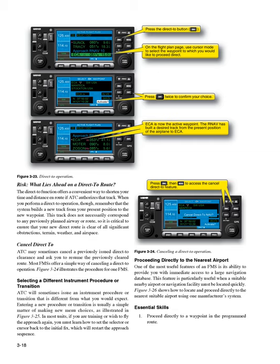The direct-to function offers a convenient way to shorten your time and distance en route if ATC authorizes that track. When you perform a direct-to operation, remember that the system builds a new track from your present position to the new waypoint. This track does not necessarily correspond to any previously planned airway or route, so it is critical to ensure that your new direct route is clear of all significant obstructions, terrain, weather, and airspace. Cancel direct to: ATC may sometimes cancel a previously issued direct-to clearance and ask you to resume the previously cleared route. Most FMSs offer a simple way of cancelling a direct-to operation; Figure 3-24 illustrates the procedure for one FMS.